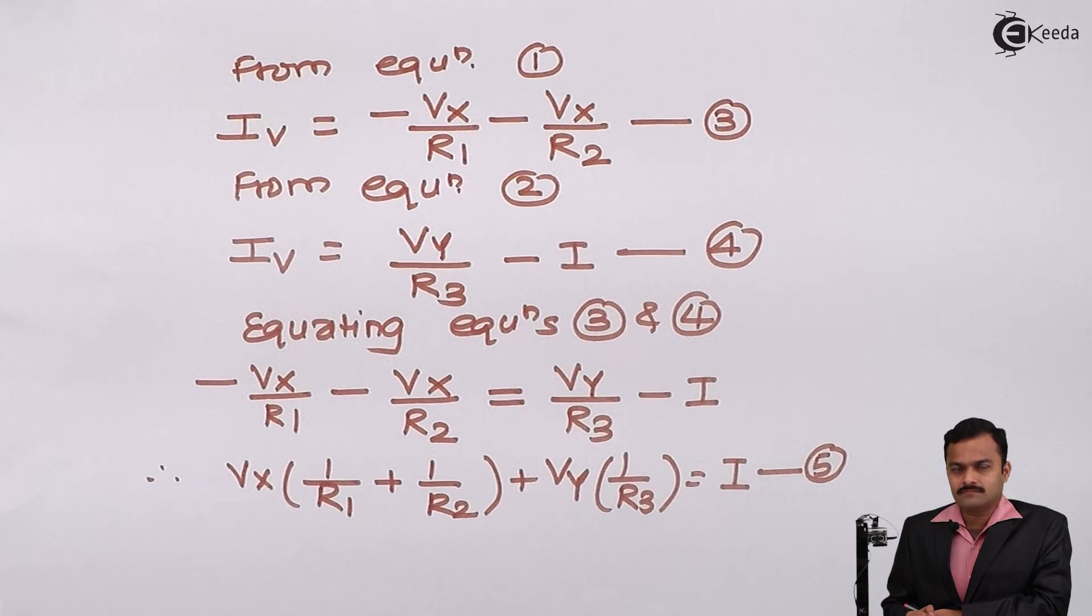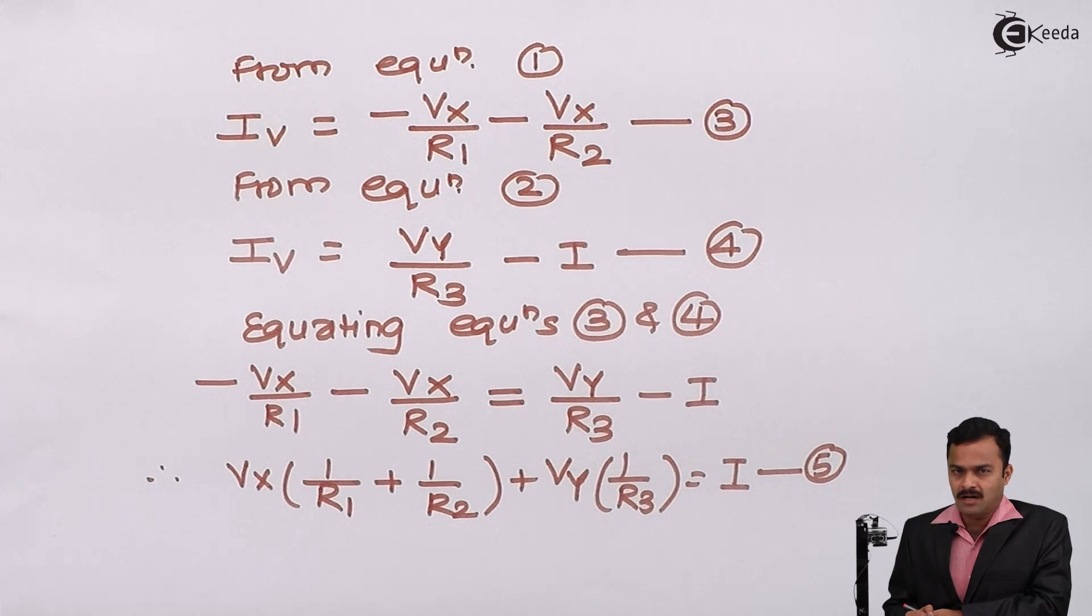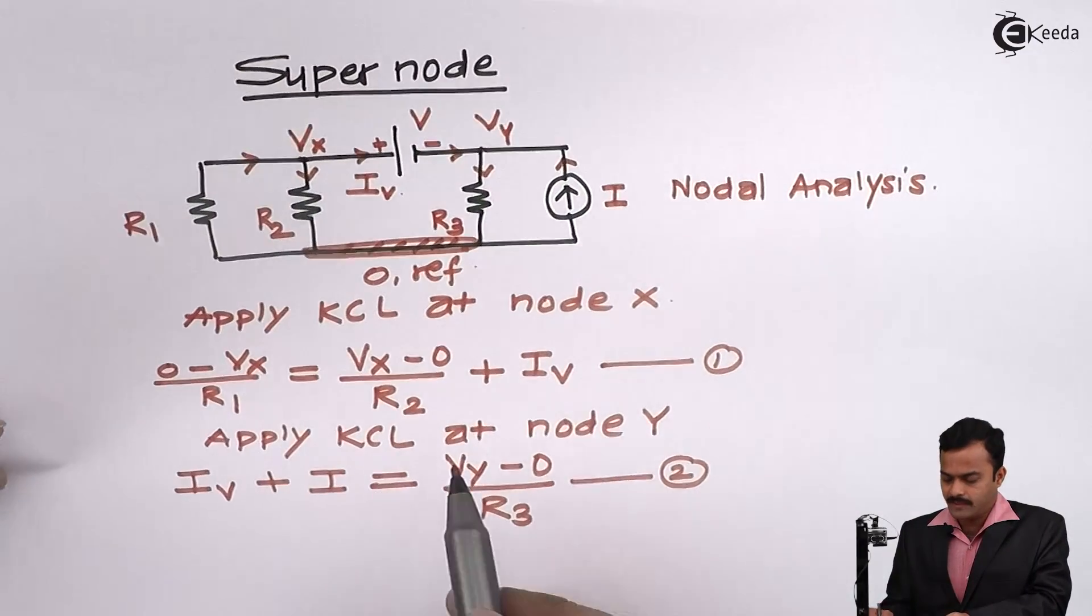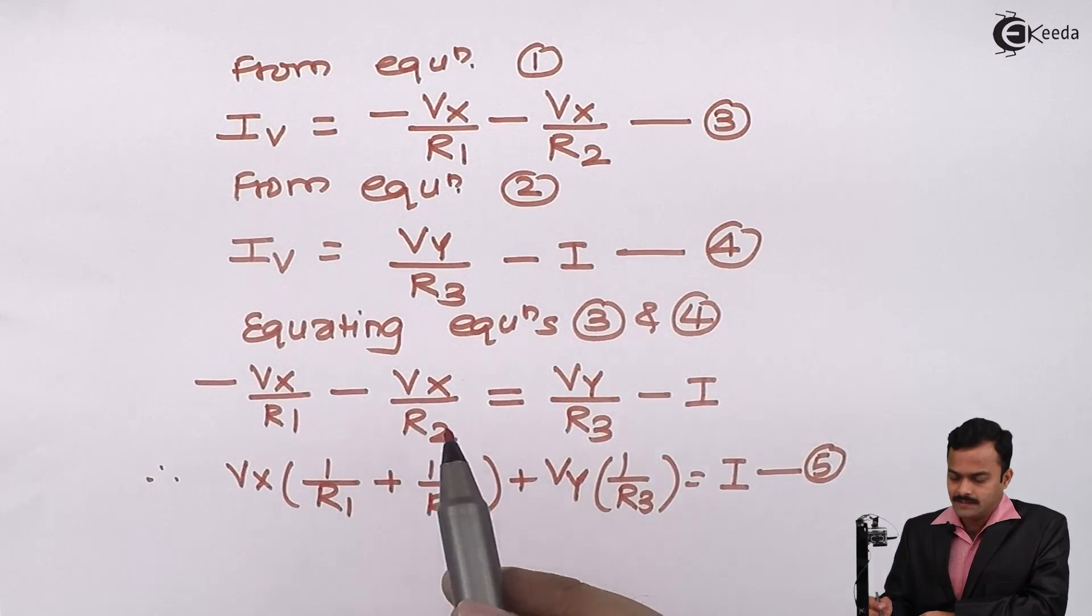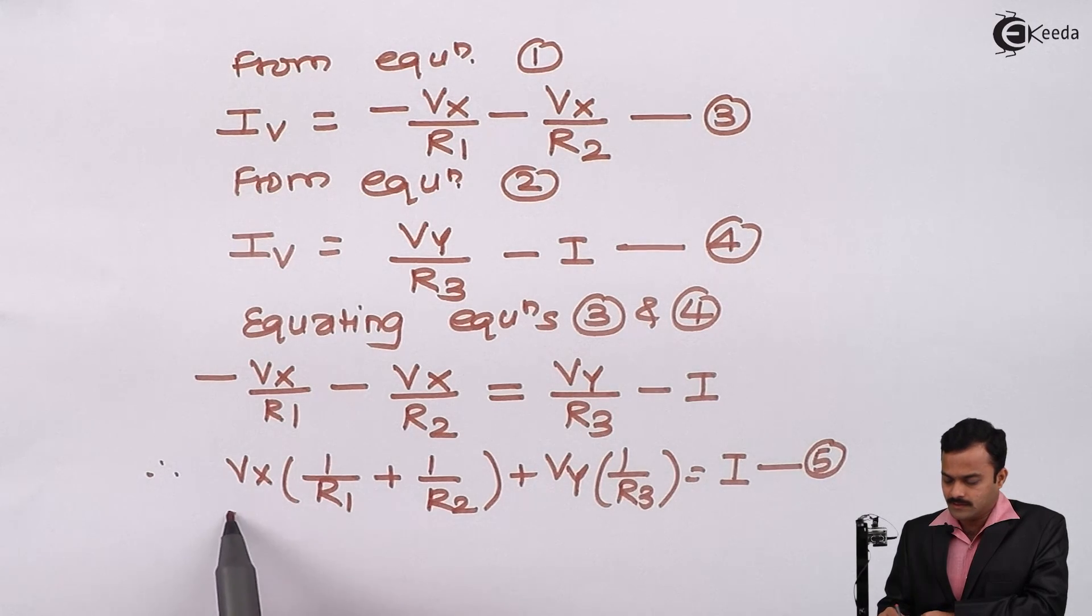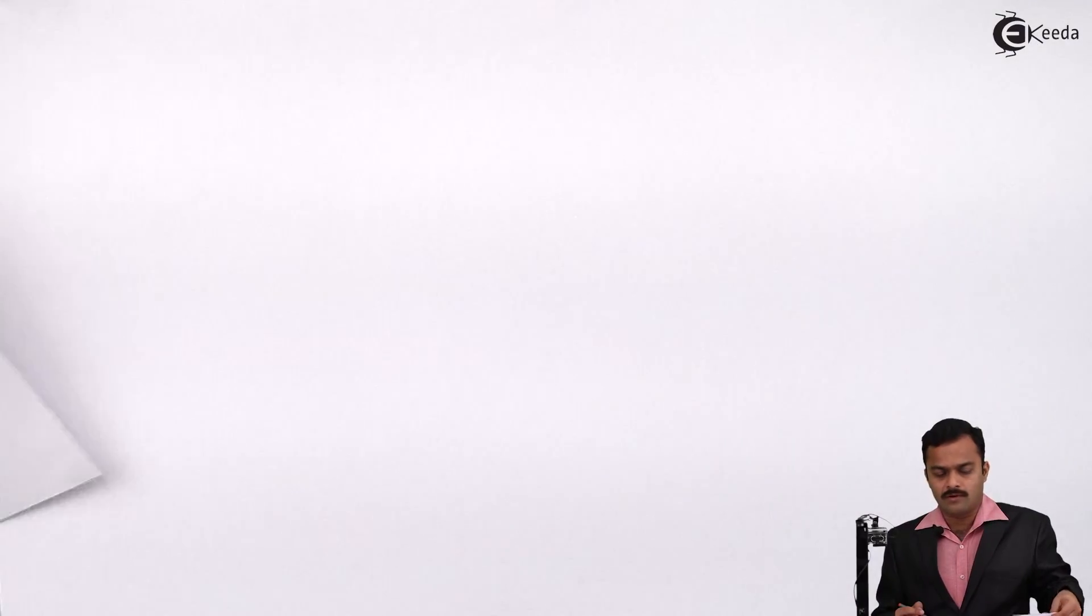So now what I have done, I have written two equations in terms of IV as a third variable. Since I am having two nodes, I should only have two equations and two variables. But this particular circuit having voltage source between two nodes given. Because of that, I am getting third variable IV also. So I eliminated the third variable IV like this. So ultimately, this equation I will get. Second equation I need to form.